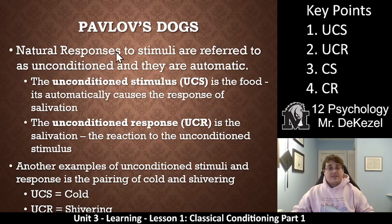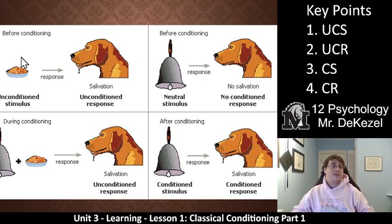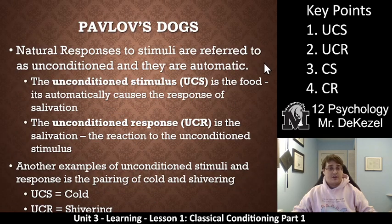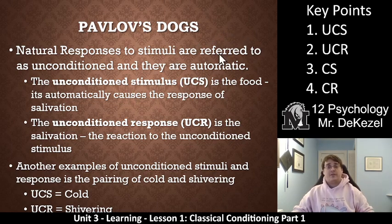Natural responses to stimuli are referred to as unconditioned, and they are automatic. The stimulus at the beginning was the meat powder — unconditioned. The response was salivation — unconditioned. The unconditioned stimulus, or UCS, is the food; it automatically causes the response. The unconditioned response is the salivation; it's the reaction to the unconditioned stimulus. We abbreviate these as UCS and UCR, and that's key point one and key point two. Another example of an unconditioned stimulus-response pairing is cold and shivering — once you get cold, the natural response is to shiver.